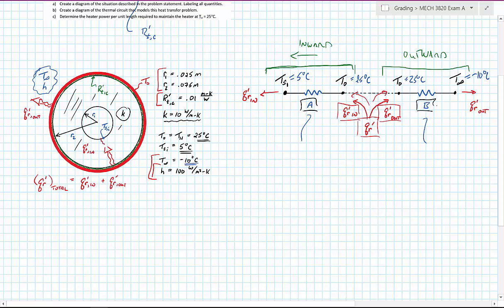But first I need to specify what these resistances are that I just have labeled A and B. Well, B is the easier one to write because it is just a convective term. And the convection is happening at the outer radius, so R_2. So it's going to be 1 over 2π R_2 times H.